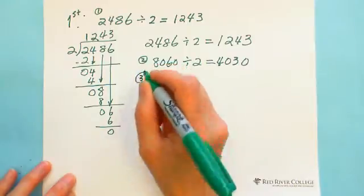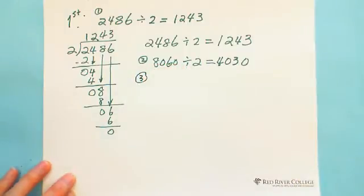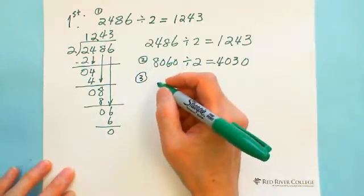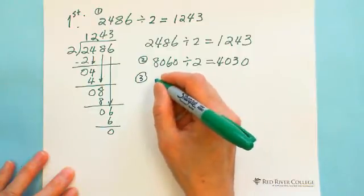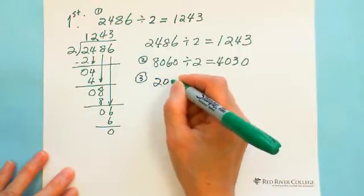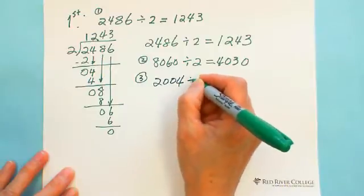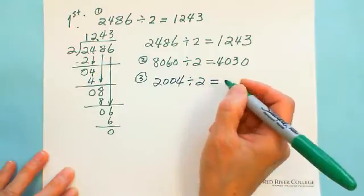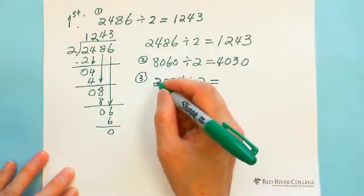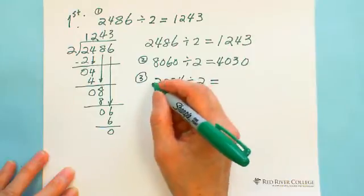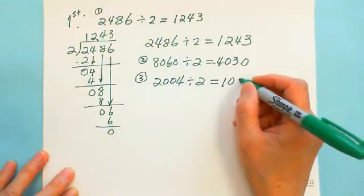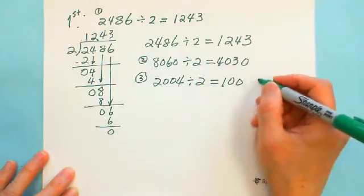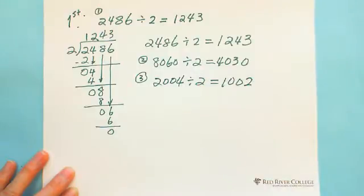A third example: if you have 2004 divided by 2, just: half of 20 is 10, 0 is still 0, and half of 4 is 2. So very quickly you get the answer.